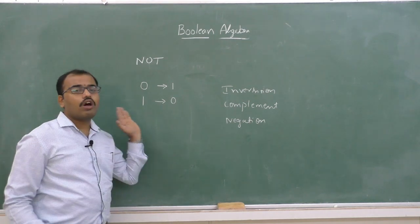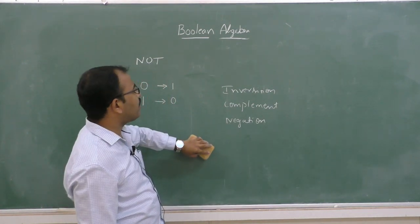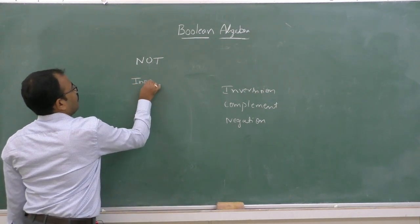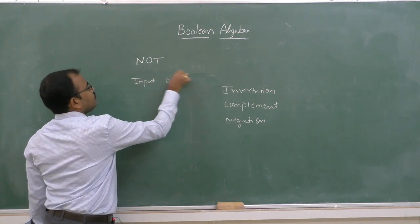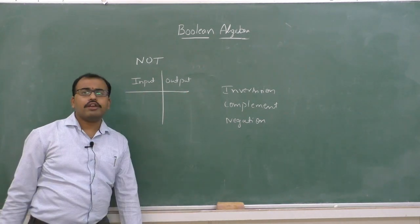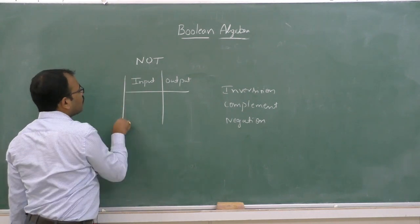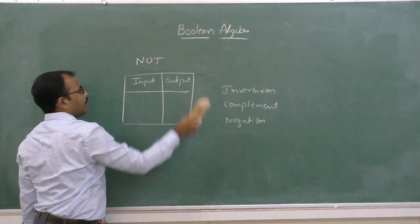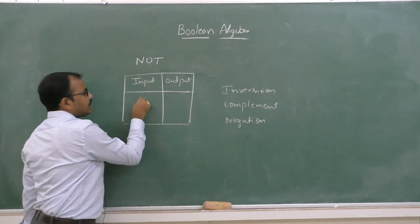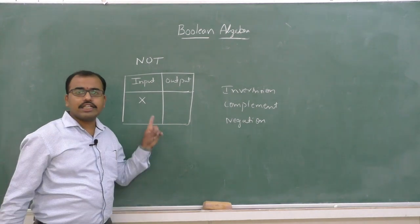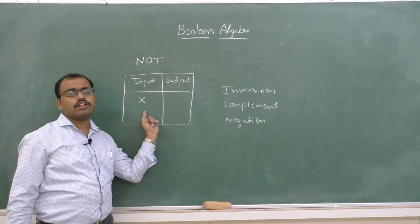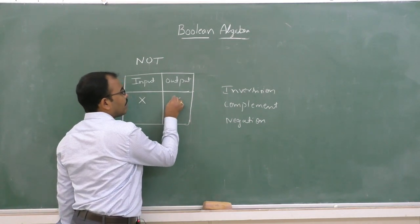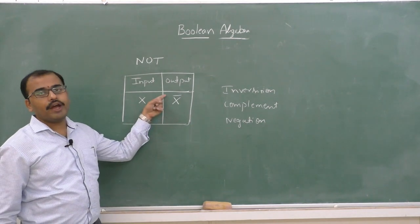This is called as negation or NOT operation. Now let us look at the truth table for NOT. The input is represented and the corresponding output is given. NOT is a unary operator, so only one operand exists. Let us consider x is the input; then the output will be x-bar, also called x-complement.